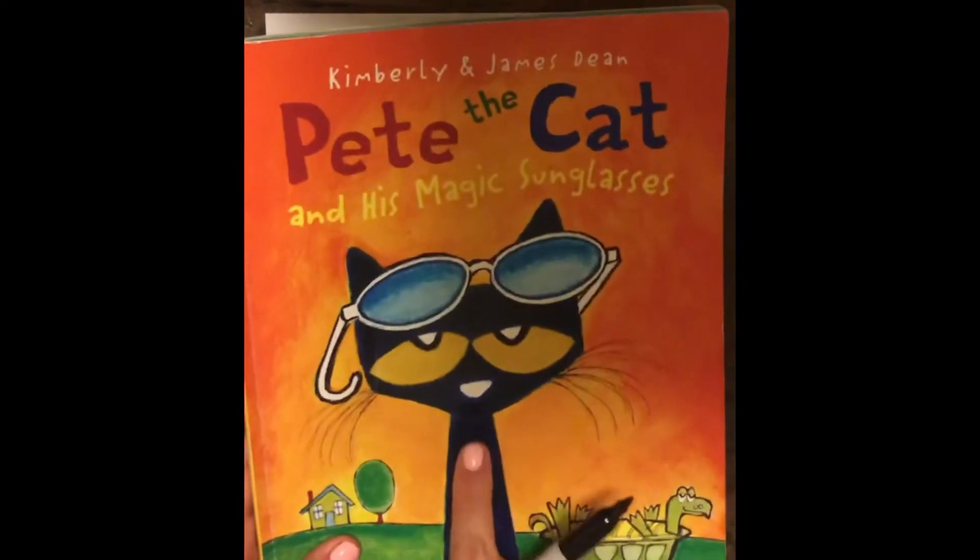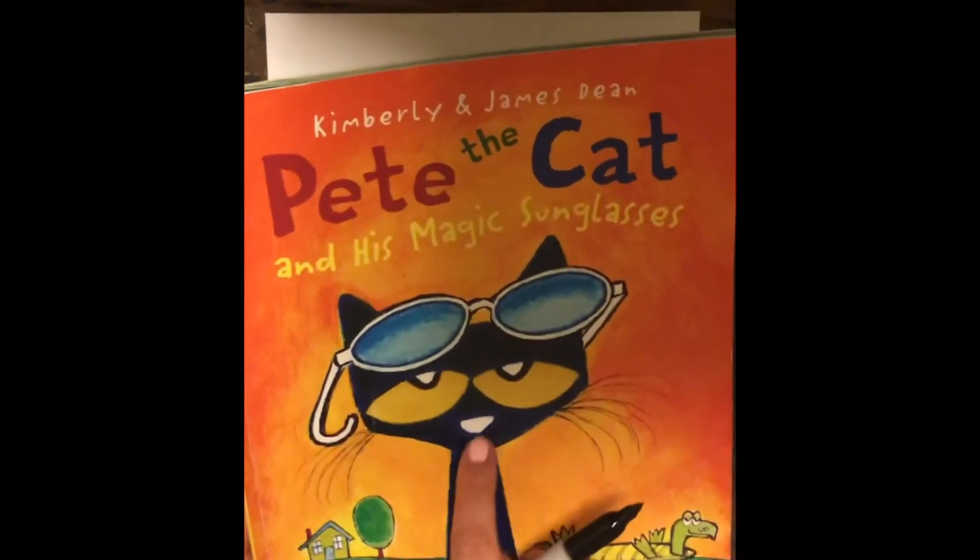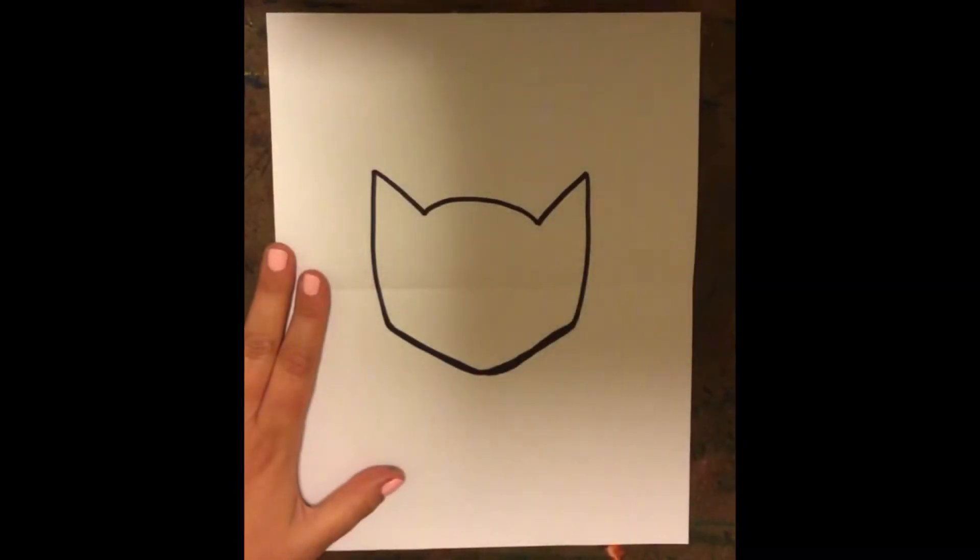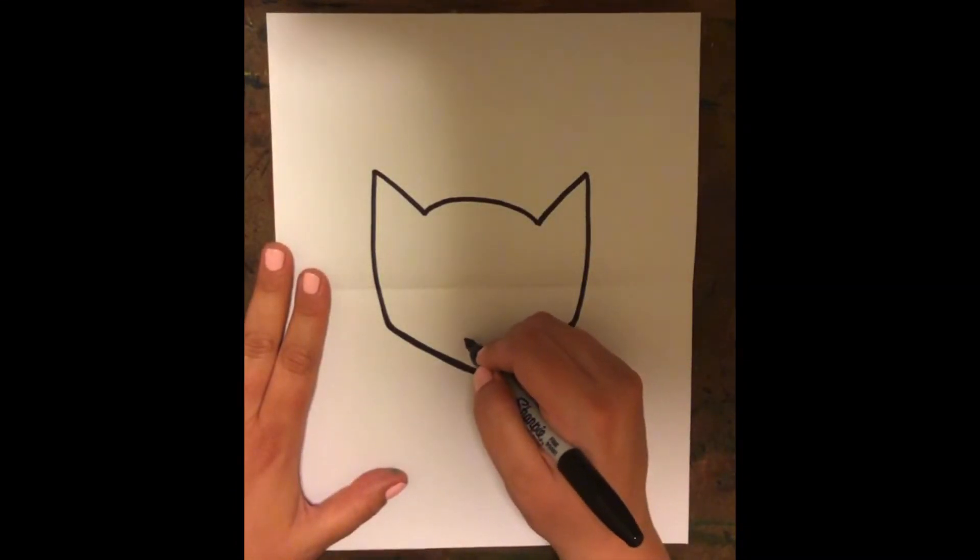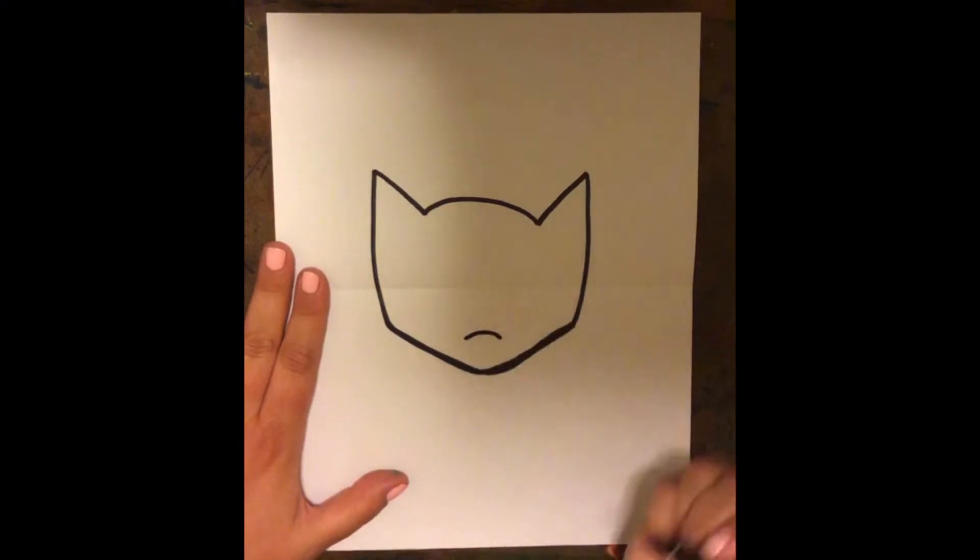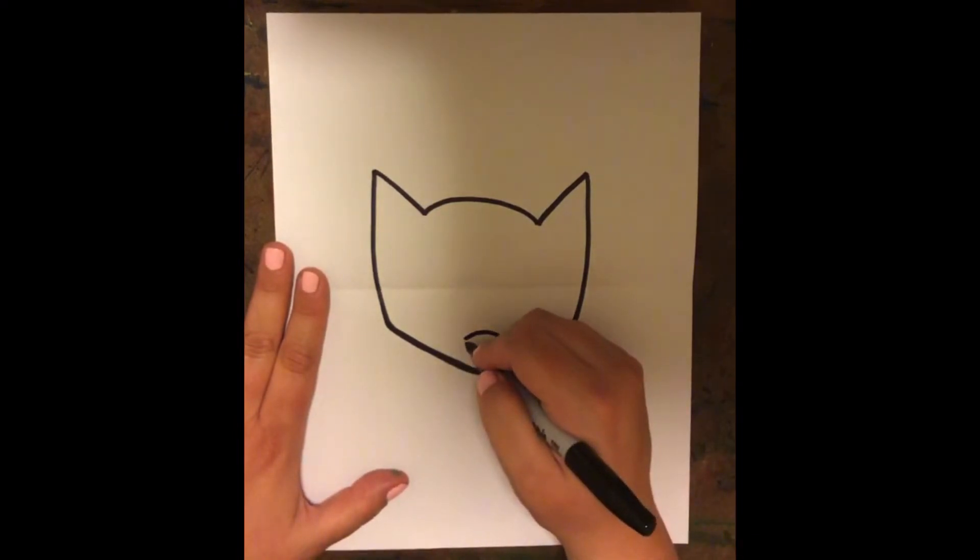Okay, we're going to look back over here at Pete and we're going to look at his nose. And his nose is kind of an upside-down triangle, but it has this curved top right here. I'm drawing a little arch right above his chin and then I'm going to connect it with a V, so it kind of looks like a slice of pizza or an upside-down triangle.